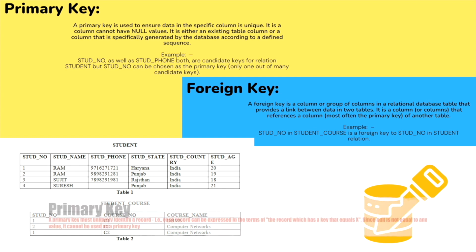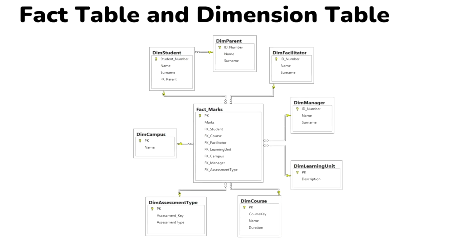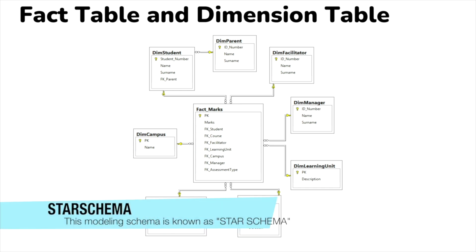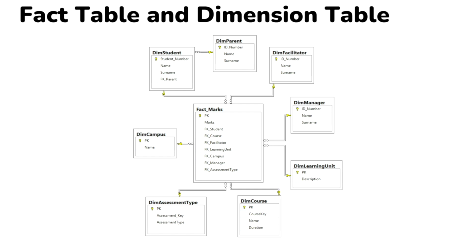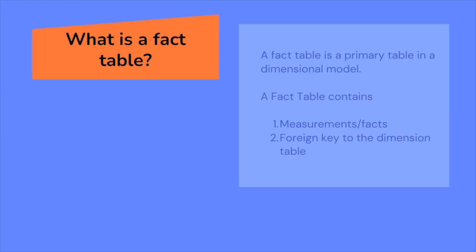A primary key cannot contain null values. Using a data model diagram, we can depict what is a fact and what is a dimension table. The middle table is your fact table, and all surrounding tables are your dimensional tables. This is a representation of a star schema which we will discuss later.